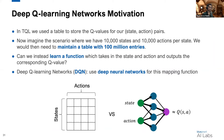Instead of maintaining a table, maybe we could learn a function which takes in as inputs a state and an action and then outputs the corresponding Q value. This would allow us to handle state and action spaces of a much larger size. That's exactly the idea behind DQNs, where for this mapping function we'll be using a deep neural network. As shown in the bottom left here, we have our state, we have our action, it passes through our network, and we get a Q value for that state-action pair.